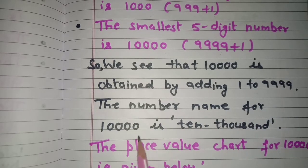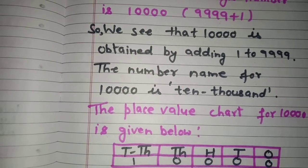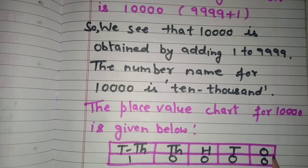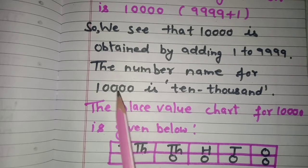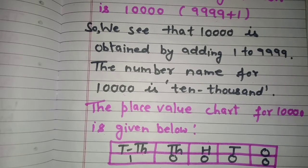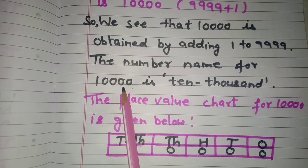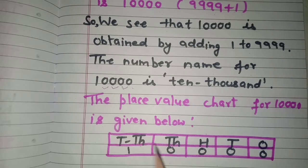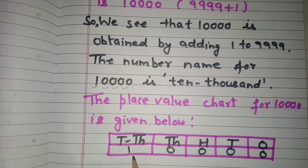The number name for 10,000 is ten thousand. Now the place value chart for 10,000 — we mention the places: ones, tens, hundreds, thousands, and ten thousands. Putting 10,000 in this chart: the last zero is at ones place, the next zero at tens, the next zero at hundreds, and the digit one is at the ten thousands place.